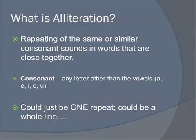So what exactly is alliteration? Alliteration is the repeating of the same or similar consonant sounds in words. A consonant is one of our letters other than A, E, I, O, or U — so the vowels.